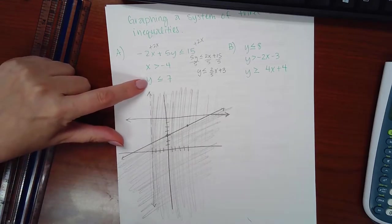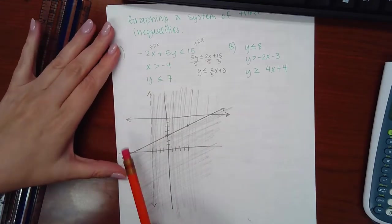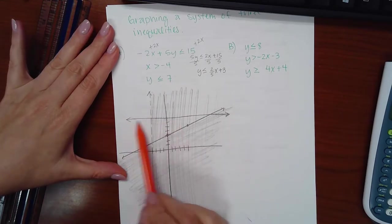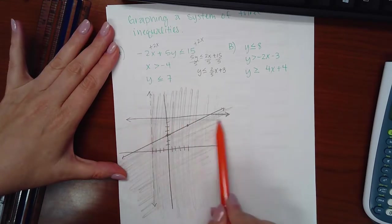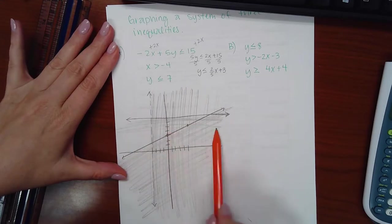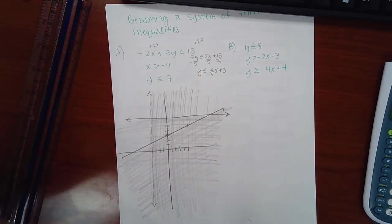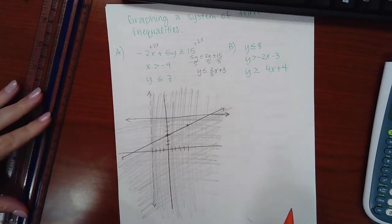So here it says when y is less than 7. Here is 7, that line, and the y values that are less than that are down here. So we need to shade this region. Now, which region got shaded by all three?